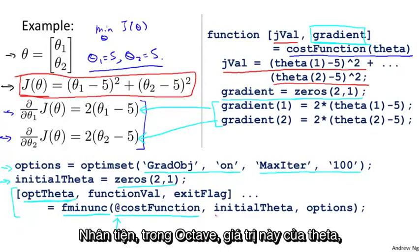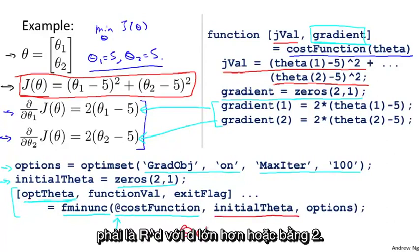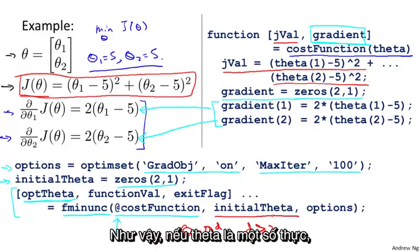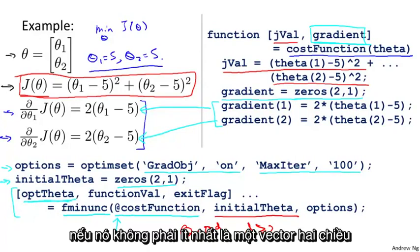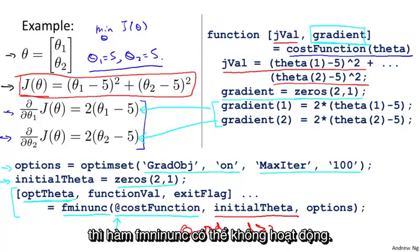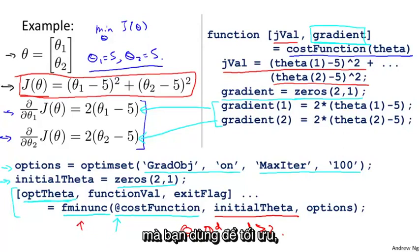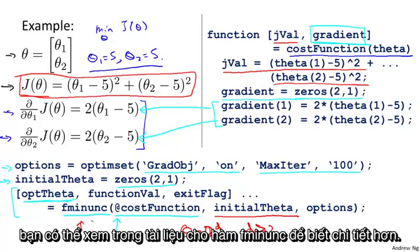I should mention, by the way, that for the Octave implementation, this value of theta — your parameter vector theta — must be in R^d for d greater than or equal to two. So if theta is just a real number, if it's not at least a two-dimensional vector or some higher-dimensional vector, this fminunc may not work. In case you have a one-dimensional function that you need to optimize, you can look in the Octave documentation for fminunc for additional details.